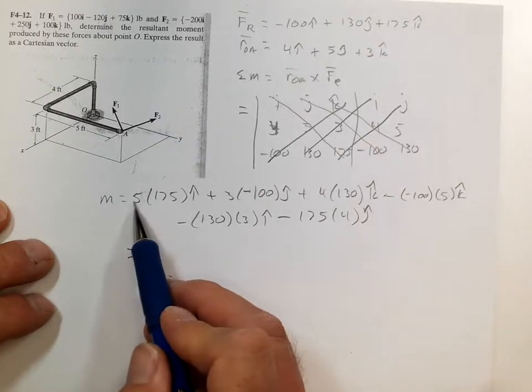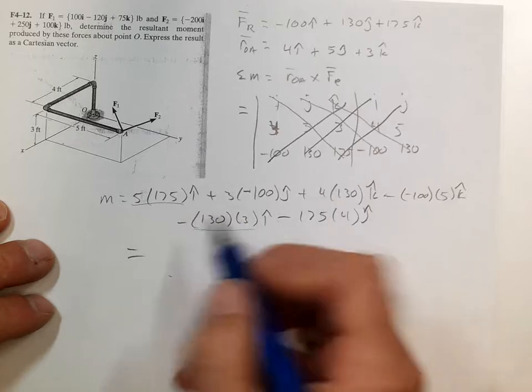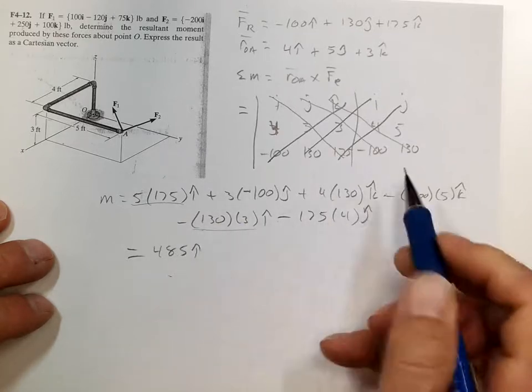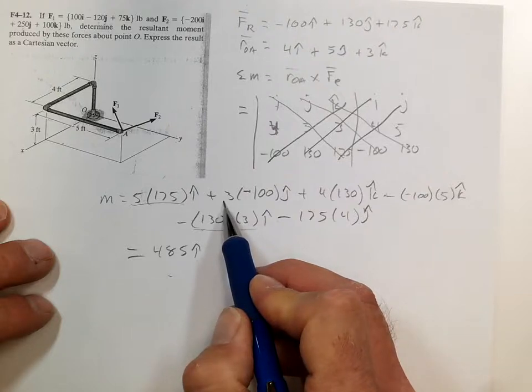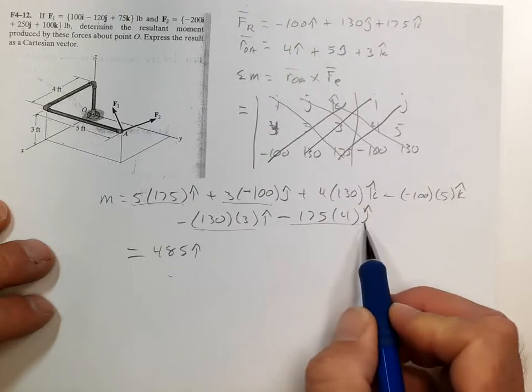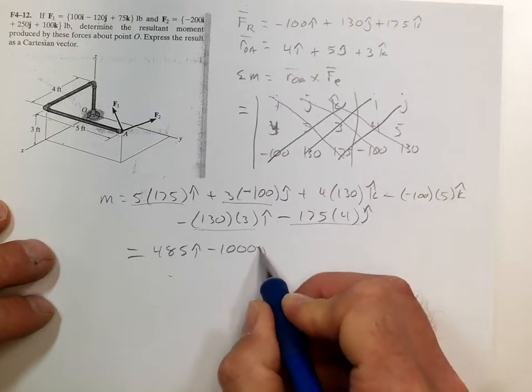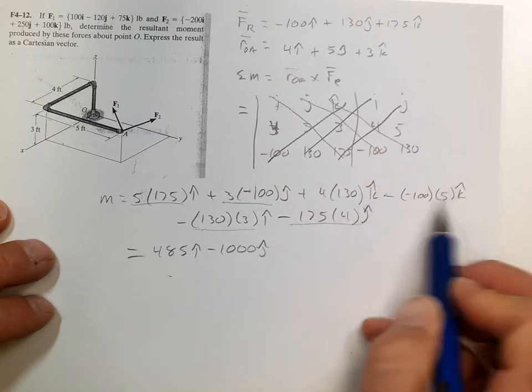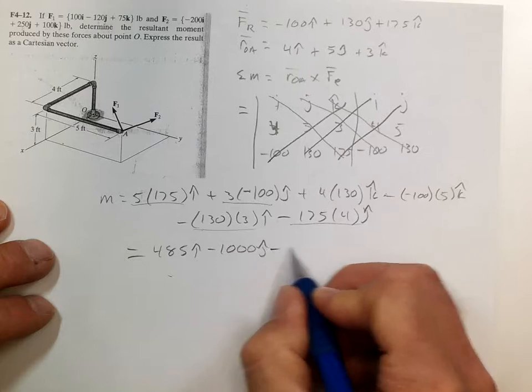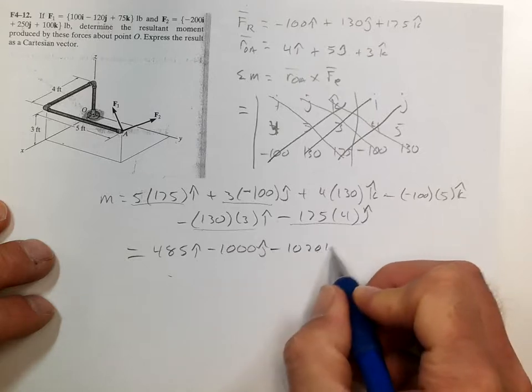Summing the i here and the i here, we get 485 in the i. Summing the j here and the j here, we get negative 1000 in the j. And summing the k's, we get negative 20 in the k direction.